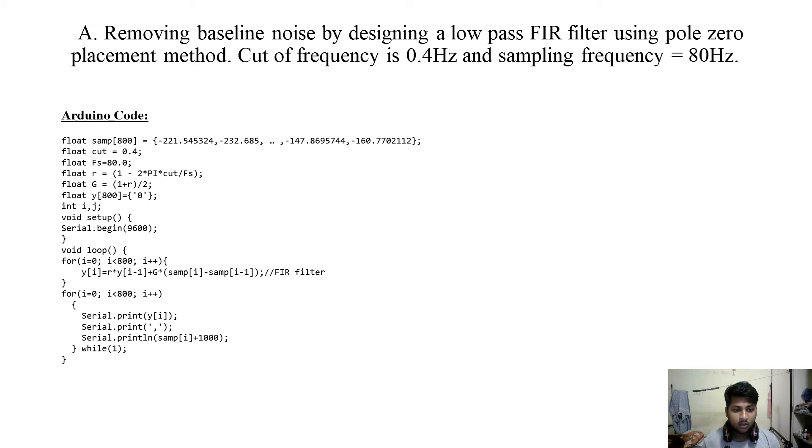And the value of gain is nothing but the average of 1 and r. In that way we can design a low pass filter with cutoff of r and we can change it back to our FIR filter form and thus we can write the following expression.